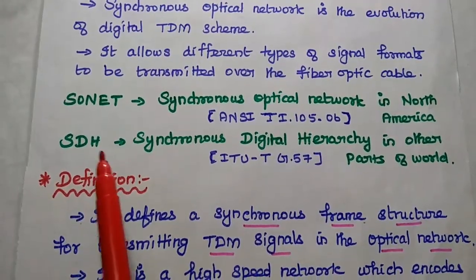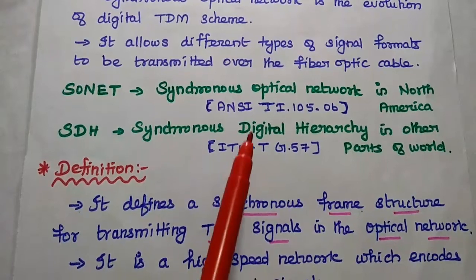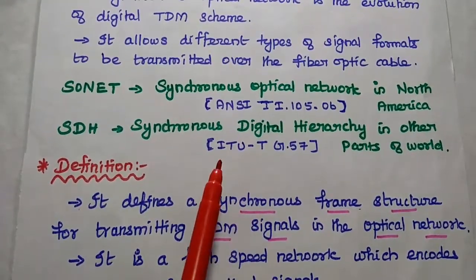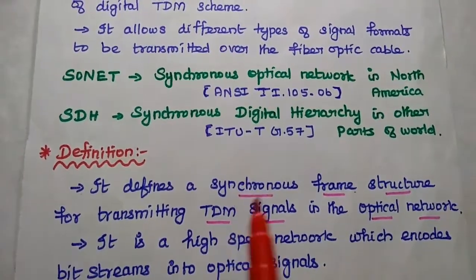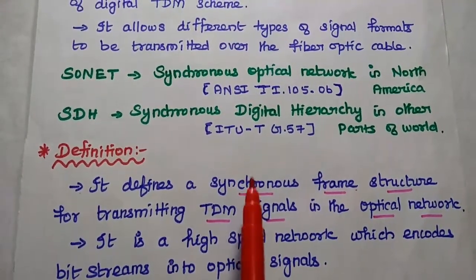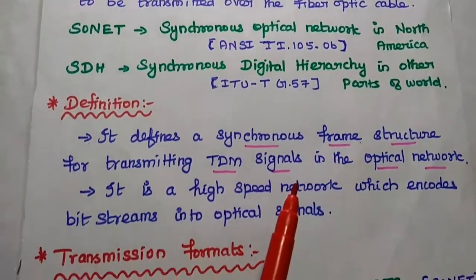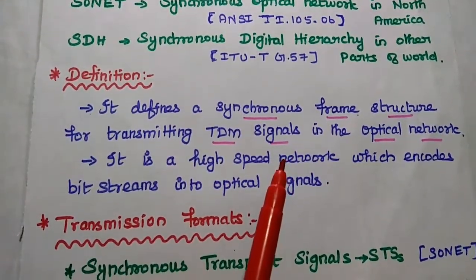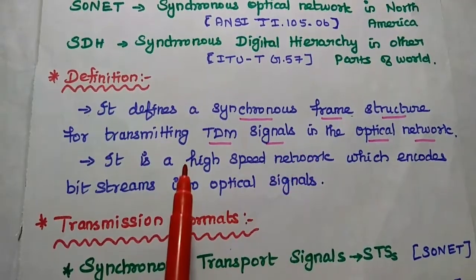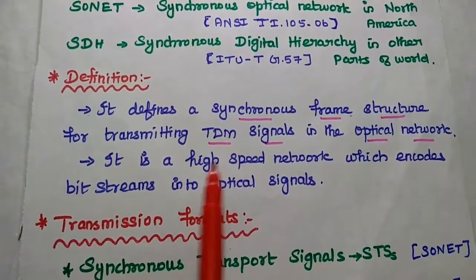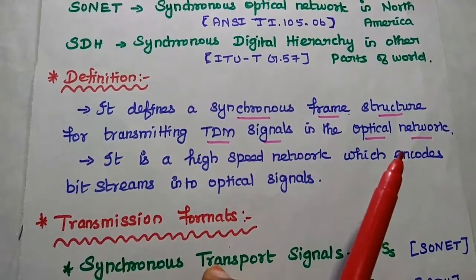SDH is the acronym for Synchronous Digital Hierarchy in other parts of the world. It was developed by ITU-T G.57. These two are the Synchronous Optical Network systems. SONET can be defined as a Synchronous Frame Structure for transmitting TDM — that is, time division multiplexed signals — in the optical network.